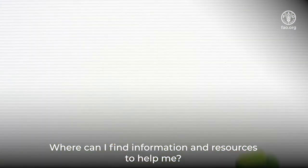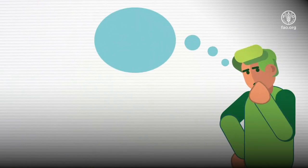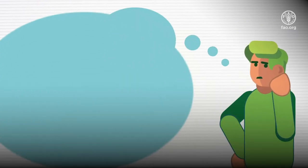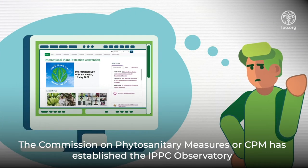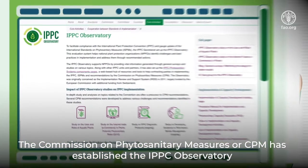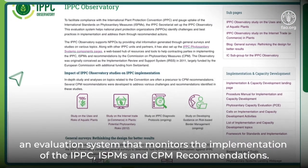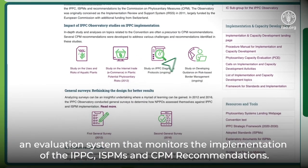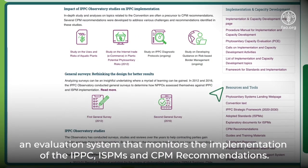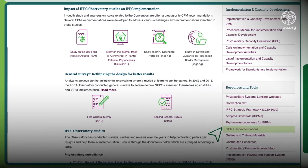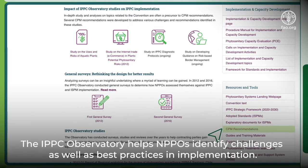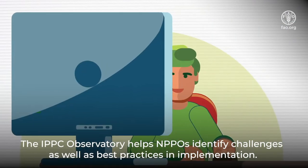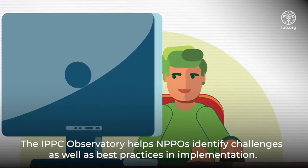Where can I find information and resources to help me? The Commission on Phytosanitary Measures has established the IPPC Observatory, an evaluation system that monitors the implementation of the IPPC, ISPMs, and CPM recommendations. The IPPC Observatory helps NPPOs identify challenges as well as best practices in implementation.